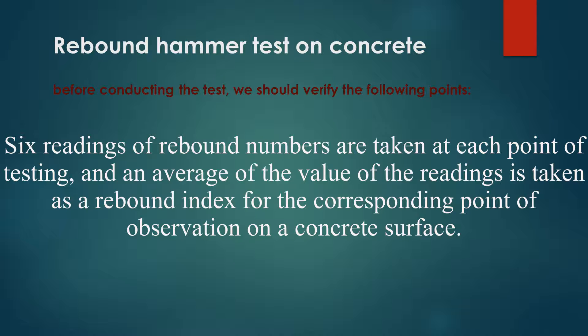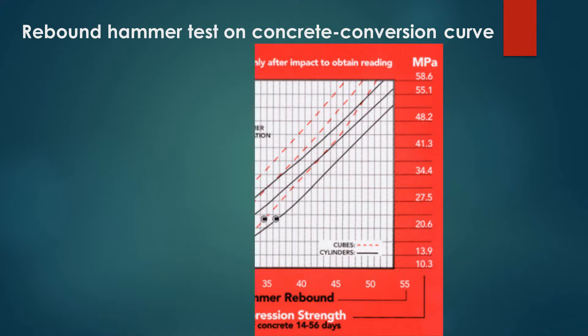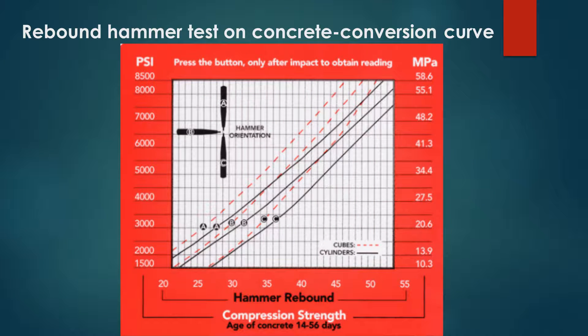The manufacturers of the rebound hammer will provide a typical conversion curve. The average six reading will be used to determine the compressive strength of a concrete member from the conversion curve given by the manufacturers.